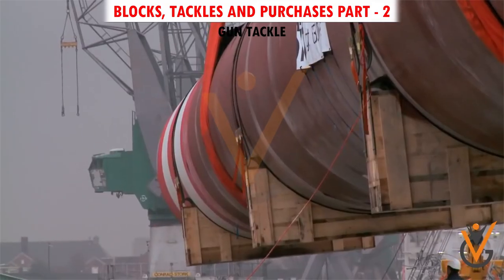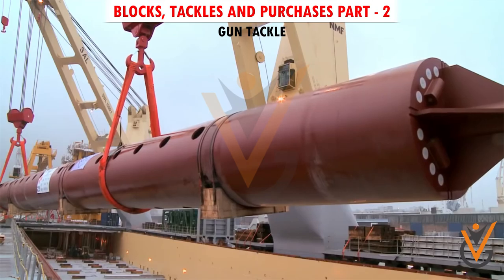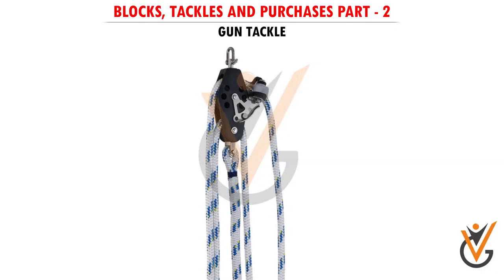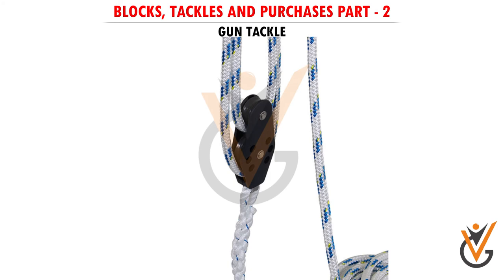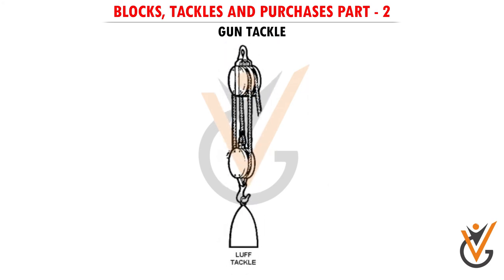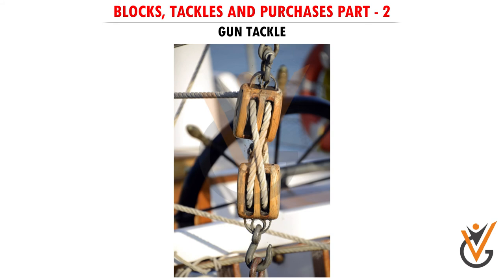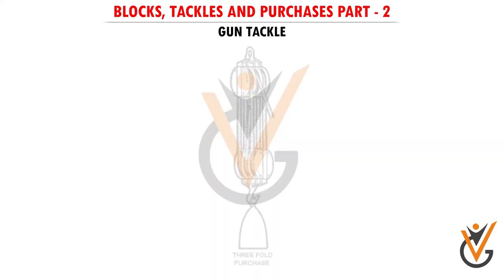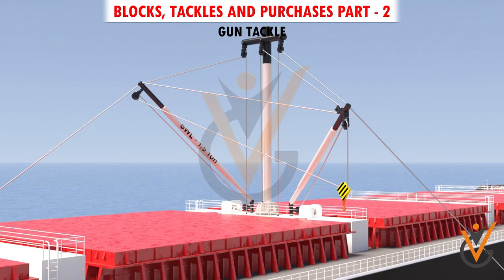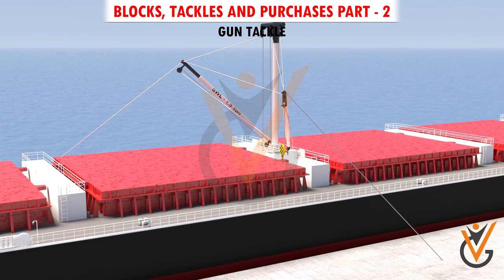Handy billy — a double block with a tail and a single hook block to which the standing part is made fast; gives a power gain of three to four times. Bluff tackle — same as handy billy but has two hook blocks; power gained is three to four times. Two-fold purchase — two double blocks; power gained is four when used to disadvantage and five when rove to advantage. Three-fold purchase — two three-fold blocks; power gained is six or seven times. Used for heavy lift derricks with heavier lifting gear and greater number of sheaves per block to lift greater weight while minimizing the size of wire used.